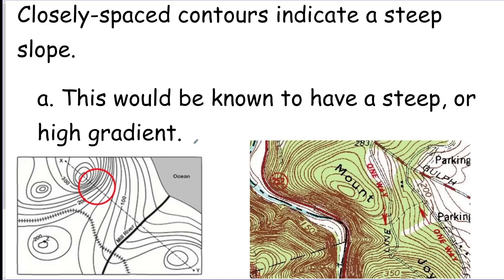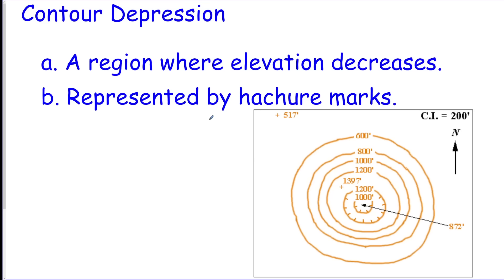Closely spaced contours, a steep slope, so that would be a high gradient. That means a fast change in a short distance. We got a depression. These are hasher marks. They have little dashes inside of them and they show that the area is going down. So just remember it repeats the same elevation one time before it starts to drop by the contour interval. Contour interval is what each line counts by.